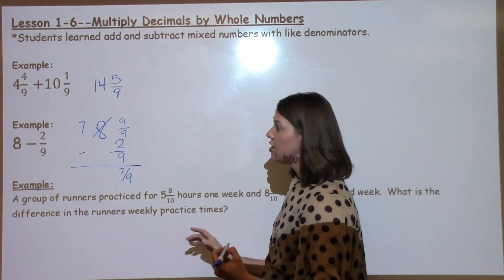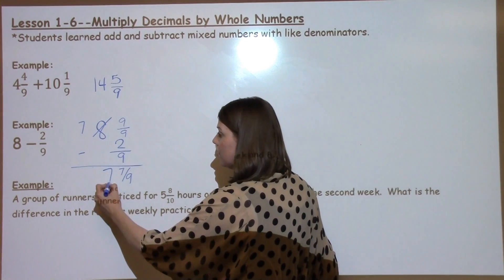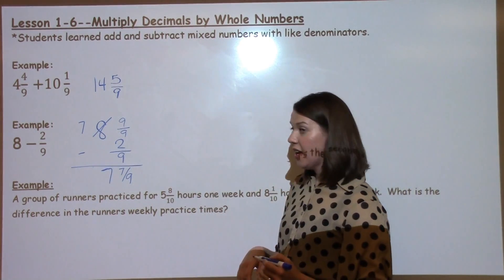A tricky part of this question is making sure that you go ahead and subtract. 7 minus nothing is 7. So our answer is 7 and 7 ninths.